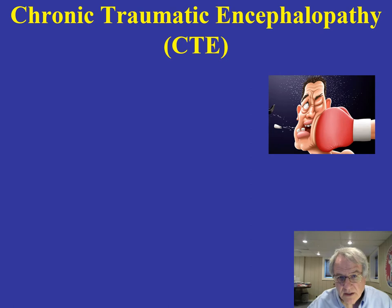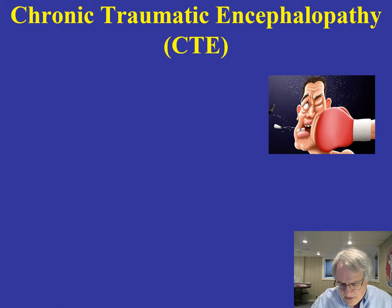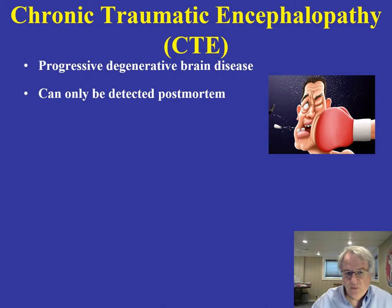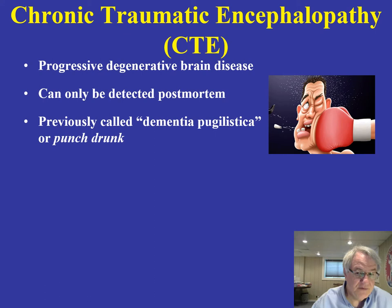This descriptor called chronic traumatic encephalopathy — CTE — was at one time referred to as being 'punch drunk.' It's a very progressive degenerative brain disease, and unfortunately it can only be detected once a person has passed away — only postmortem. This was at one time called dementia pugilistica, and it was associated with the sport of boxing.